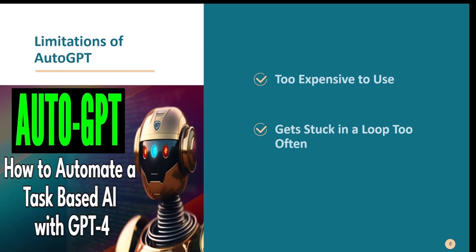Despite its capabilities, Auto-GPT has key limitations. First, it's expensive to use: it relies on the GPT-4 model, making task completion costly even for small tasks. This is because Auto-GPT can call GPT-4 numerous times per step. It also cannot replicate outputs across scenarios — for example, if asked to find top running shoes for both road and turf, it won't create a reusable function for the turf category; it starts from scratch, increasing cost.